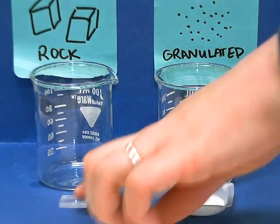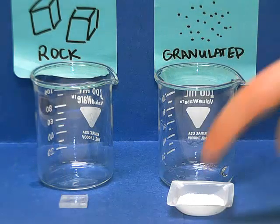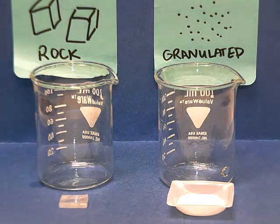The chunk of salt weighs about 1.75 grams, so I've got 1.75 grams of granulated salt as well.